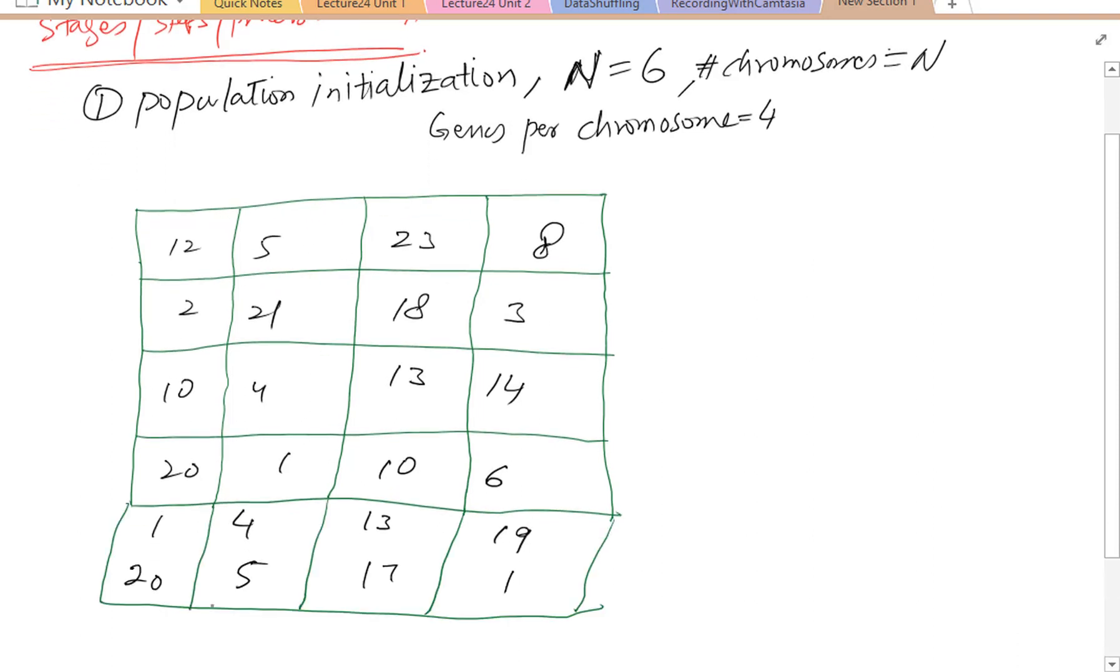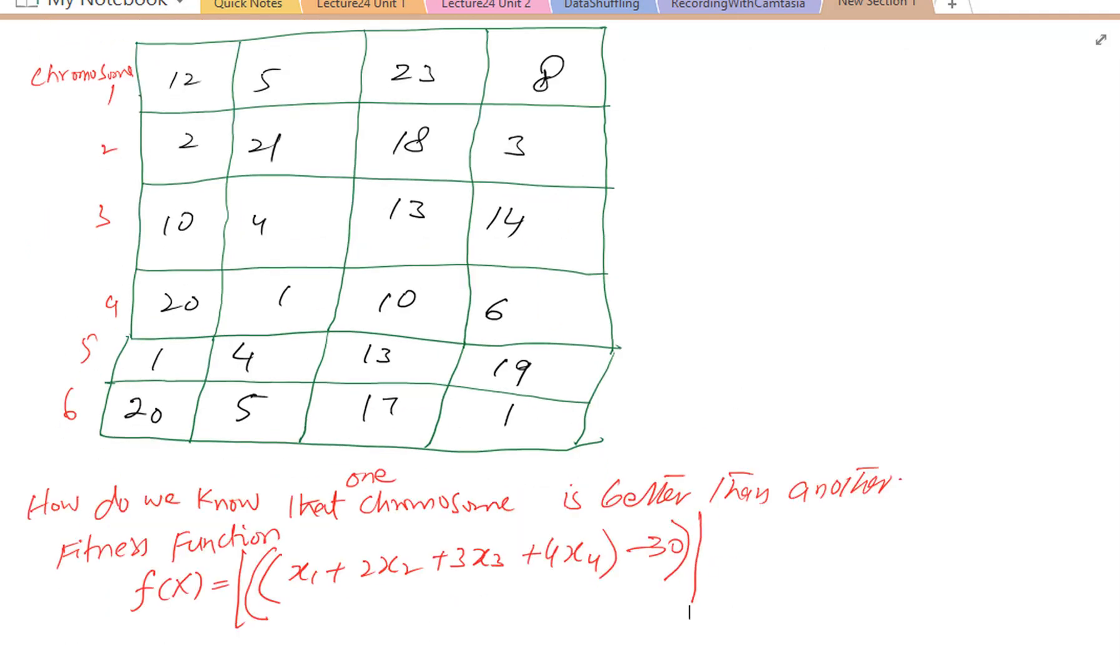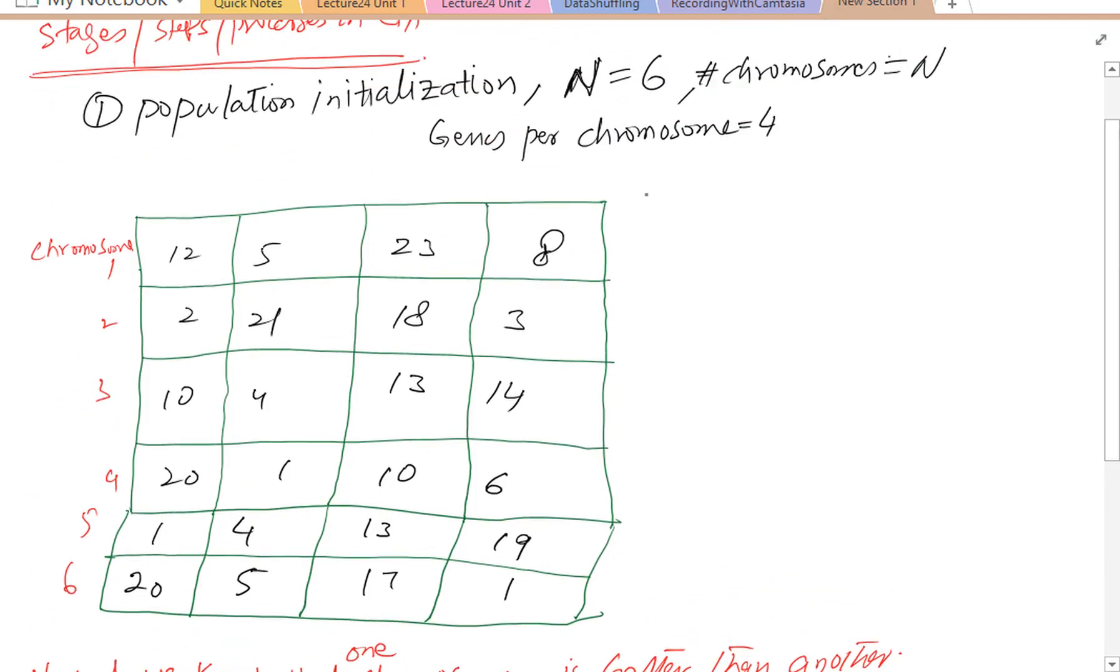After random initialization, the next step is to compute the fitness of each chromosome. Fitness can be computed as X1 plus 2X2 plus 3X3 plus 4X4 minus 30 and the difference is absolute difference. Now, if this value is smaller, it means we are closer to the target. Exactly 0 means we are on target.